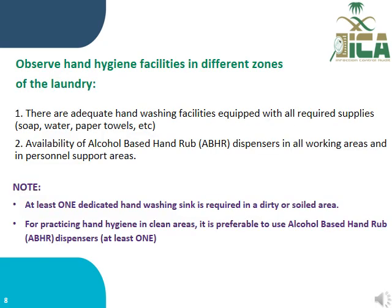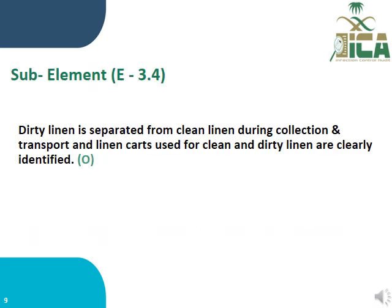Observe hand hygiene facilities in different zones of the laundry. Number one: there are adequate hand washing facilities equipped with all required supplies. Number two: availability of alcohol-based hand rub dispensers in all working areas and personal support areas. E3.4: Dirty linen is separated from clean linen during collection and transport. Clean and dirty linen are clearly identified, and is evaluated by observation.